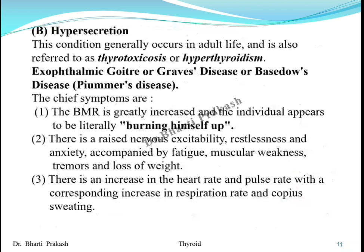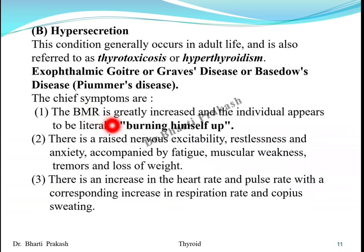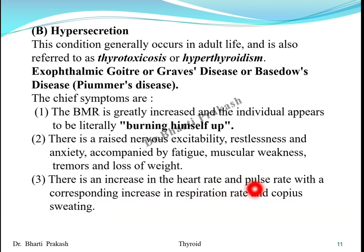Hypersecretion of thyroid hormones generally occurs in adult life and is referred to as hyperthyroidism or thyrotoxicosis, also known as exophthalmic goiter or Graves' disease. The chief symptoms include a greatly increased basal metabolic rate, raised nervous excitability, restlessness, anxiety, accompanied by fatigue, muscular weakness, tremors, and loss of weight. There is also an increase in heart rate, pulse rate, and respiration rate, with copious sweating.